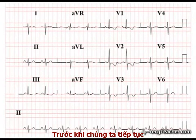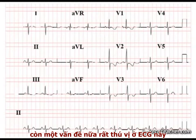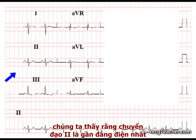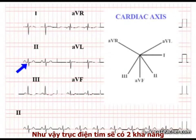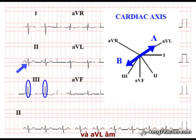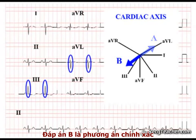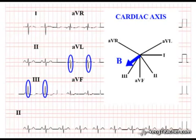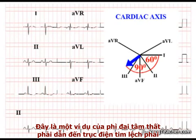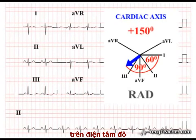Before we move on, there is at least one further feature of interest on this ECG. Looking at the frontal leads, we note that lead 2 is isoelectric, giving two possible cardiac axes at right angles to this lead. As lead 3 is strongly positive and AVL negative, option B must be correct. This is an example of RVH resulting in right axis deviation on the ECG.